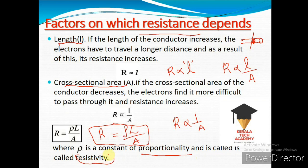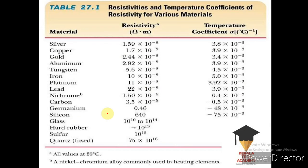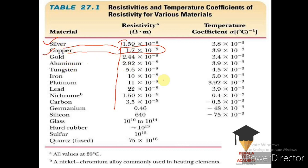Resistivity is denoted by rho (ρ). The reciprocal of resistivity (1/ρ) is conductivity. There are resistivity values for different elements. For silver, resistivity is 1.59 × 10⁻⁸. For copper, the resistivity is 1.7 × 10⁻⁸. We also need to use the temperature coefficient of resistance.